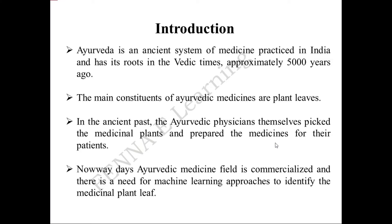Ayurveda is an ancient system of medicine practiced in India with its roots in the Vedic times, approximately 5000 years ago. The main components consisted of Ayurvedic medicines or plant leaves. In the ancient past, the Ayurvedic physicians themselves picked the Ayurvedic leaves and had to correctly identify the medicinal leaf.